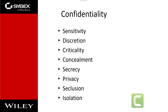Other concepts and aspects of confidentiality include the following. Sensitivity refers to the quality of information which could cause harm or damage if disclosed. Discretion is an active decision where an operator can influence or control disclosure in order to minimize harm or damage. Criticality is the level to which information is mission critical — the higher the level of criticality, the more likely the need to maintain confidentiality of that information.